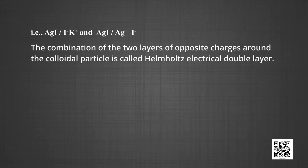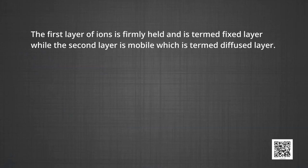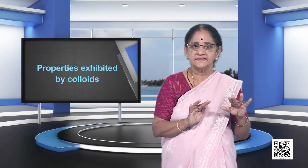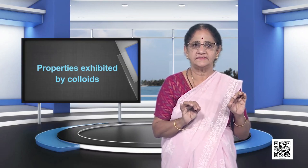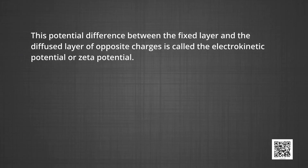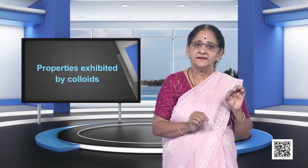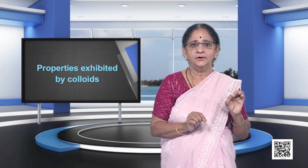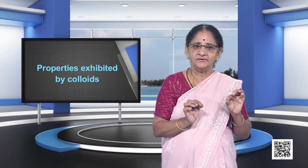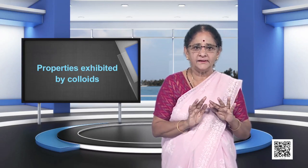The combination of the two layers of opposite charges around the colloidal particle is called the Helmholtz electric double layer. According to modern views, the first layer of ions is firmly held and termed the fixed layer, while the second layer is mobile and termed the diffused layer. Since separation of charges creates a seat of potential, a difference in potential occurs between these layers. This potential difference between the fixed layer and the diffused layer of opposite charges is called the electrokinetic potential or zeta potential. The presence of equal and similar charges on colloidal particles is largely responsible for providing stability to the colloidal solution, because repulsive forces between same-charged particles prevent them from coalescing when they come closer.